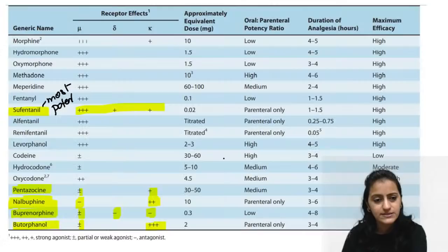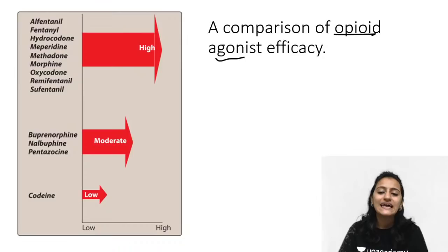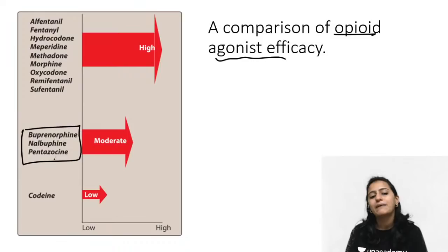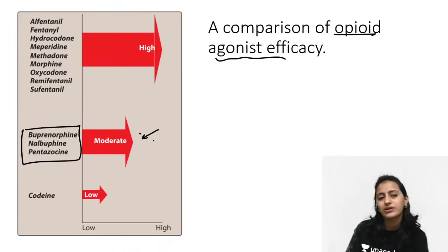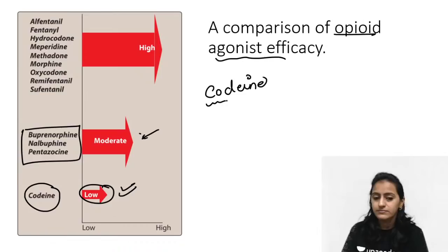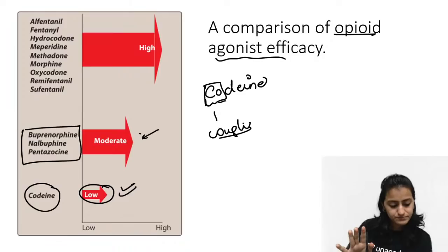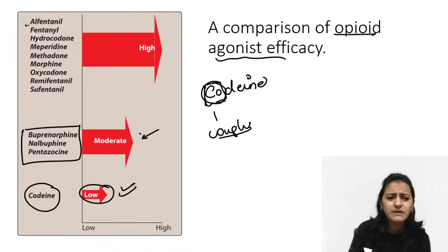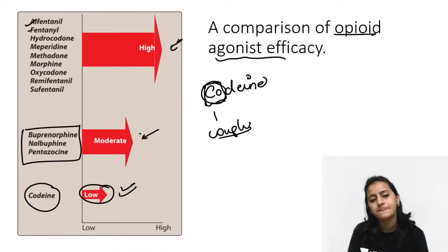A comparison of opioid agonist efficacy: mixed agonist-antagonists (buprenorphine, nalbufine, pentazocine) have moderate efficacy. Codeine has low analgesic efficacy — remember 'CO' for cough — codeine is predominantly used as a cough depressant, with less analgesic efficacy. The rest (fentanyl, alfentanil, hydrocodone, mepiridine, methadone) have high analgesic efficacy.